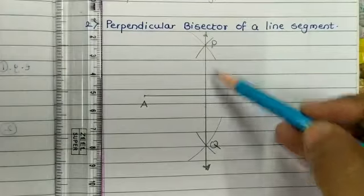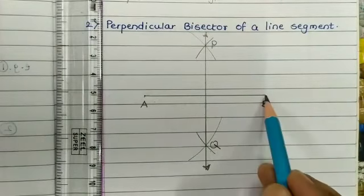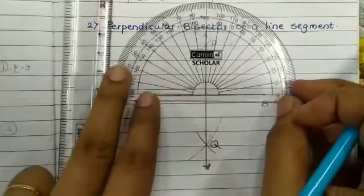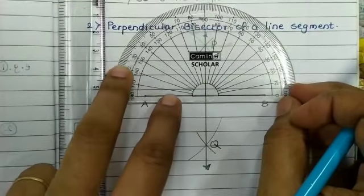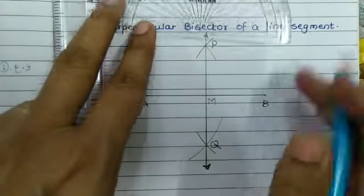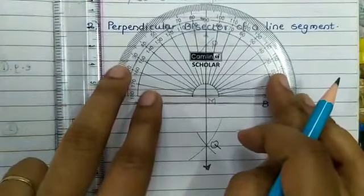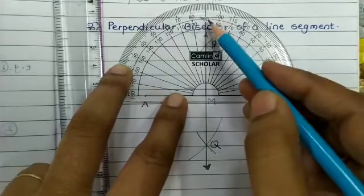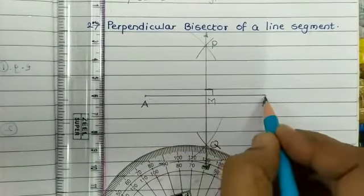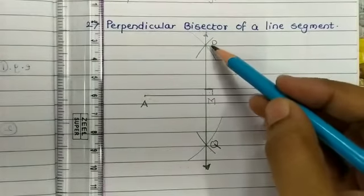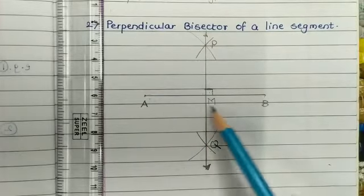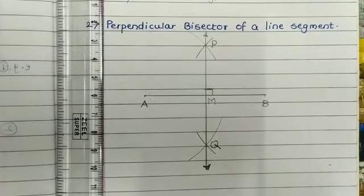So here line PQ is the bisector of this line segment. And if you measure angle PMB, it is 90 degrees, so it is perpendicular to line segment AB. Therefore, this line PQ is the perpendicular bisector of line segment AB. Now measure length AM.